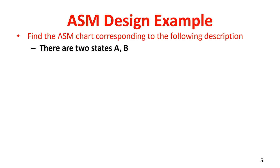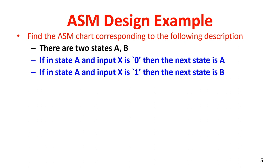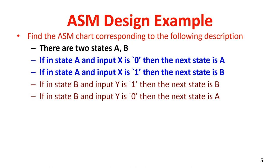There are two states A and B. If in state A, input x is 0 then the next state is A. If in state A, input x is 1 then the next state is B. If in state B, input y is 1 then the next state is B. If in state B, input y is 0 then the next state is A. This is the ASM description, similar to an FSM description.